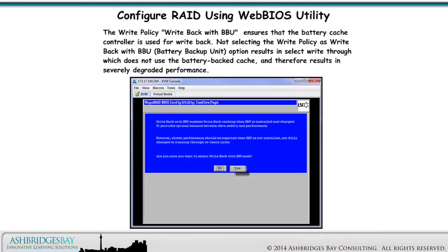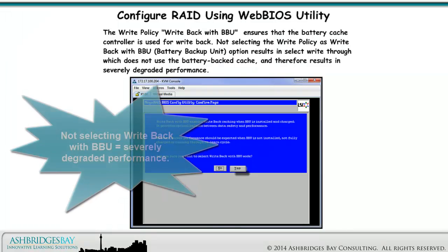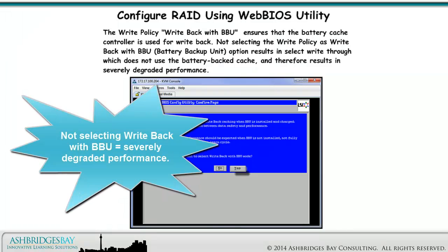The write policy, write back with BBU, ensures that the battery cache controller is used for write back. Not selecting the write policy as write back with BBU — the battery backup unit option — results in selecting write through, which does not use the battery-backed cache, and therefore results in severely degraded performance.